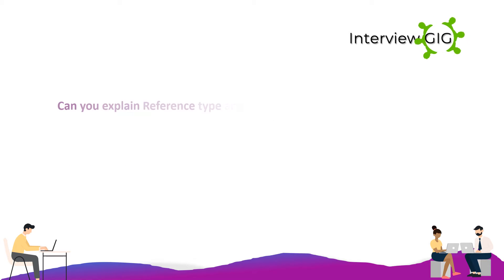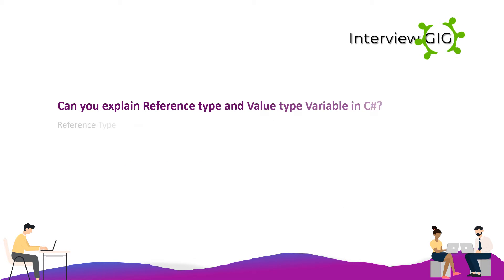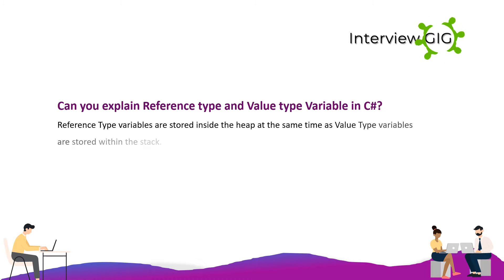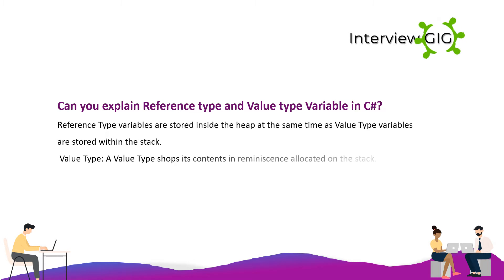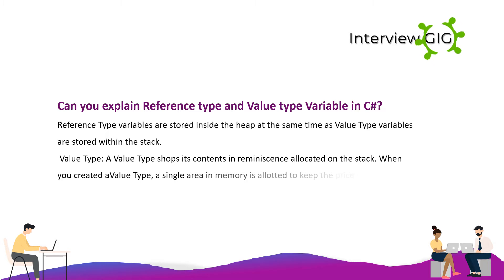What is the difference between reference type and value type variables in C#? Reference type variables are stored in the heap, while value type variables are stored in the stack. A value type stores its contents in memory allocated on the stack. When you create a value type, a single area in memory is allocated to hold the value, and that variable directly holds the value.